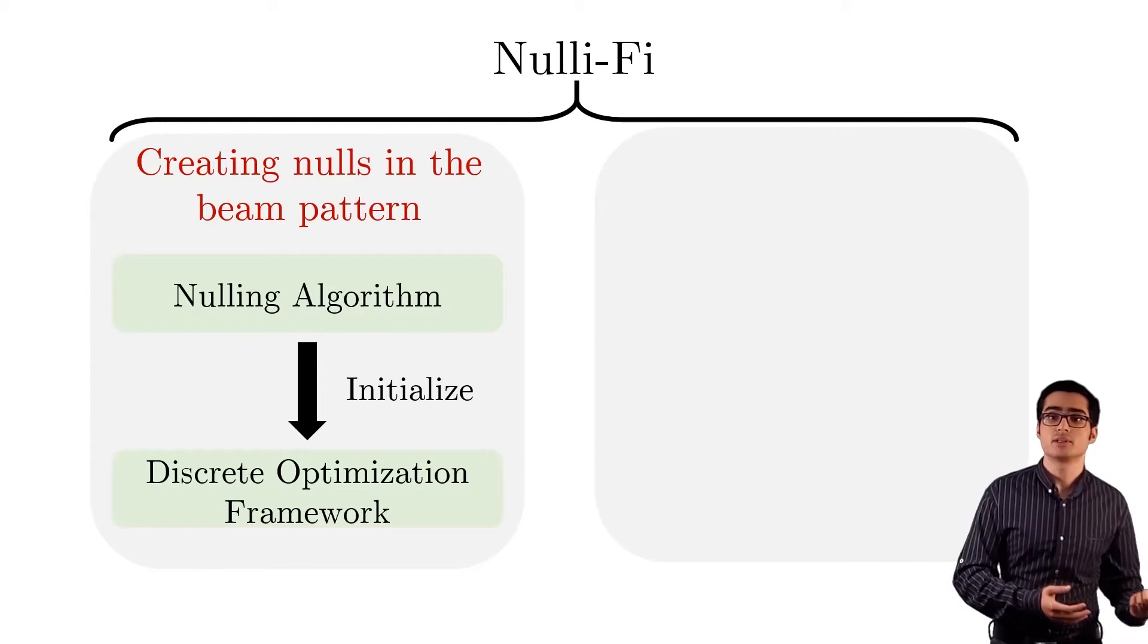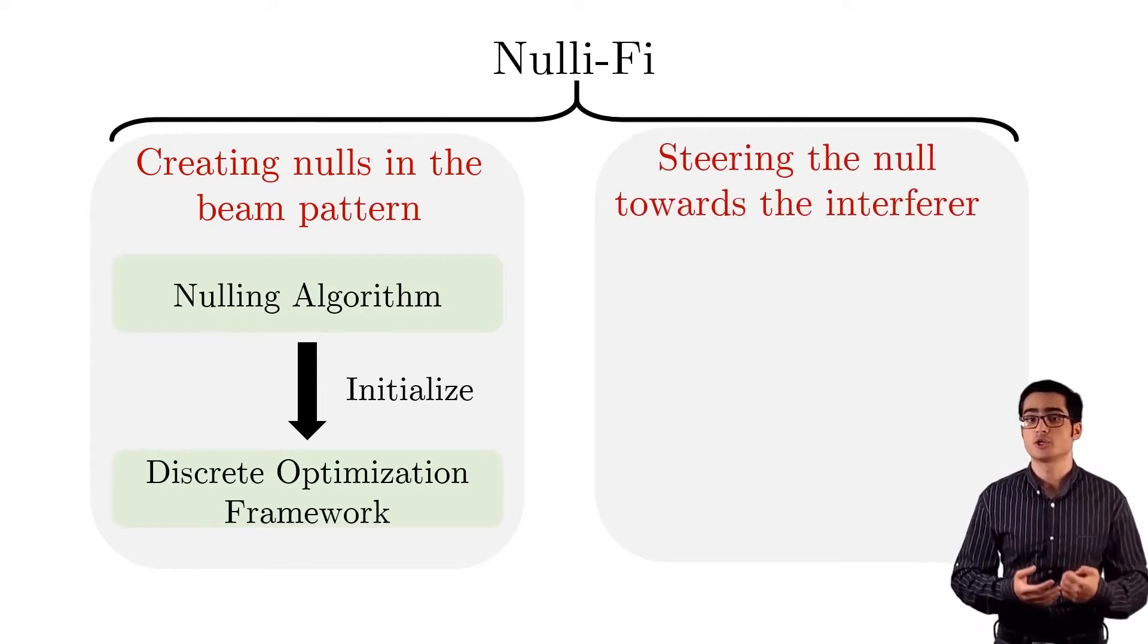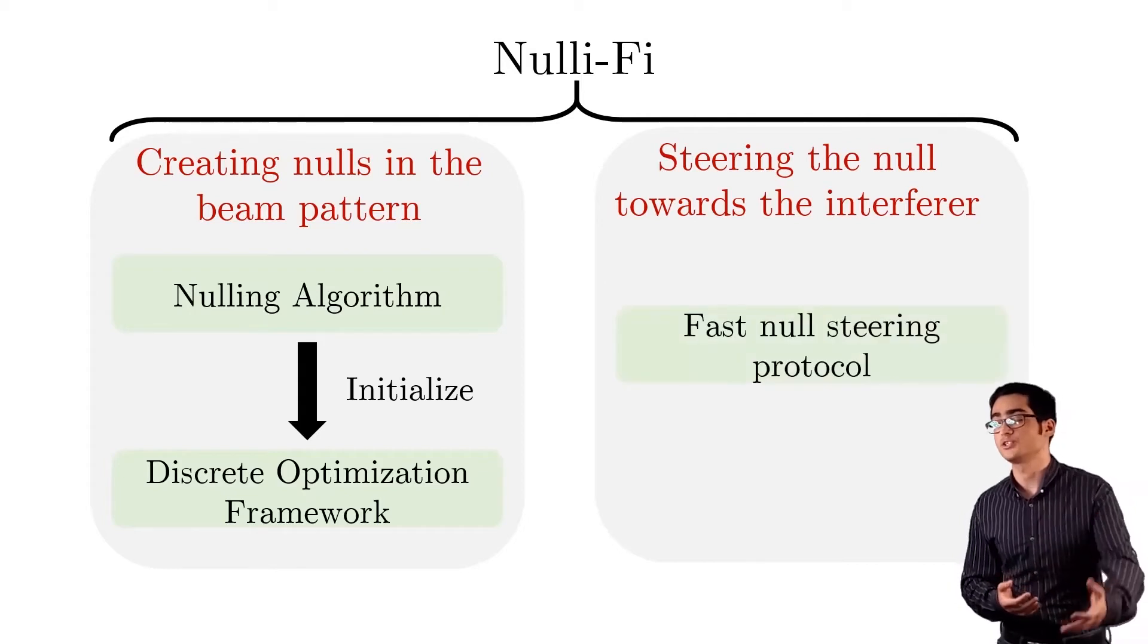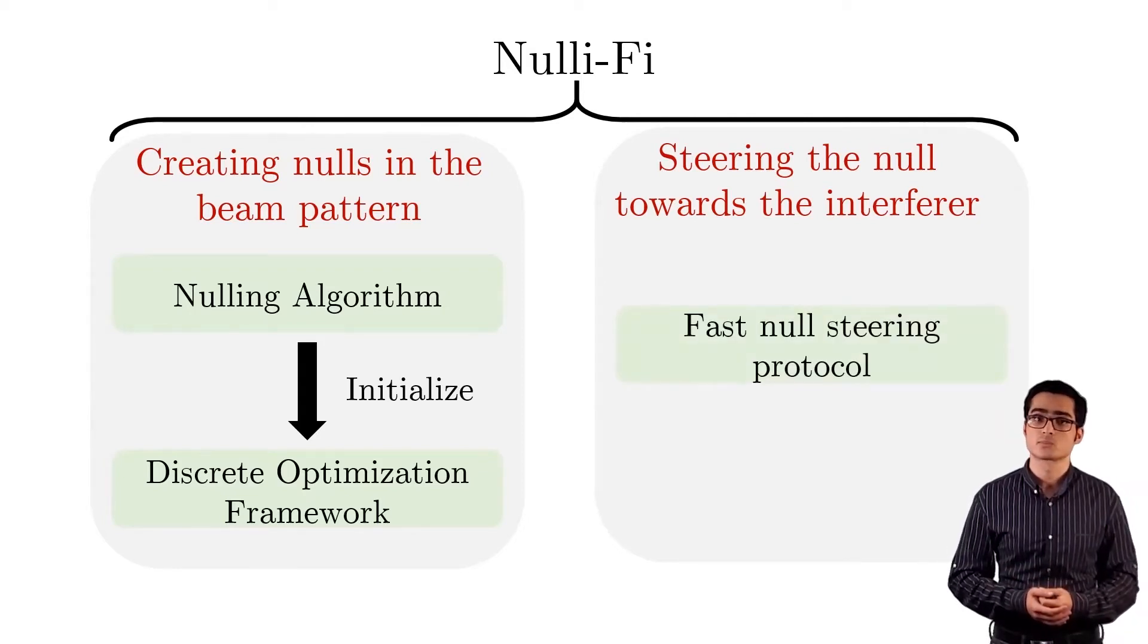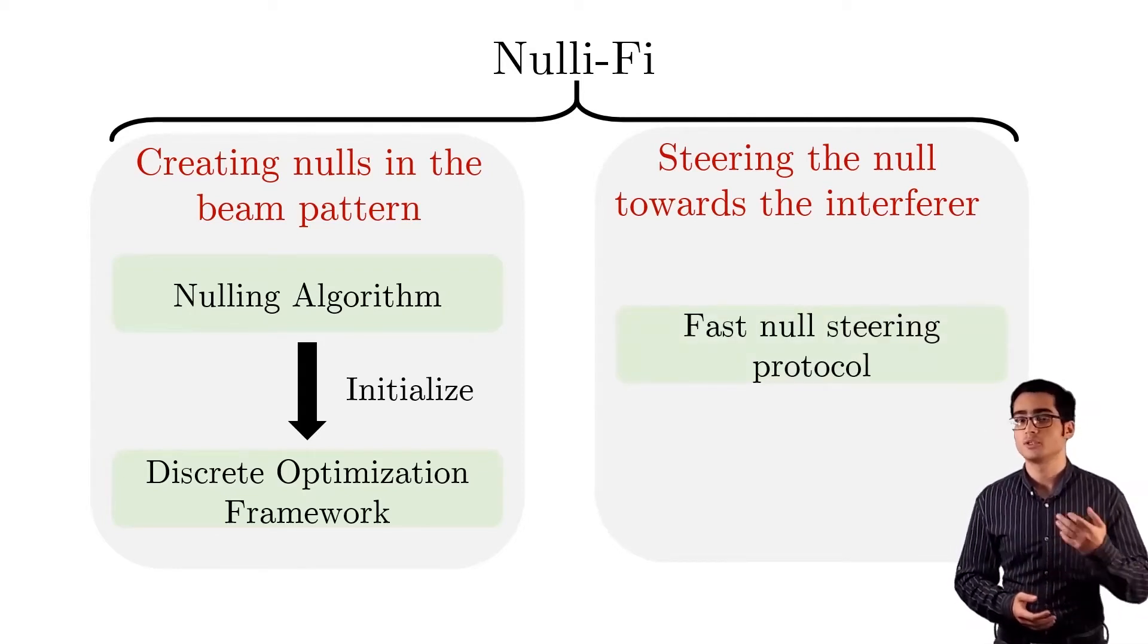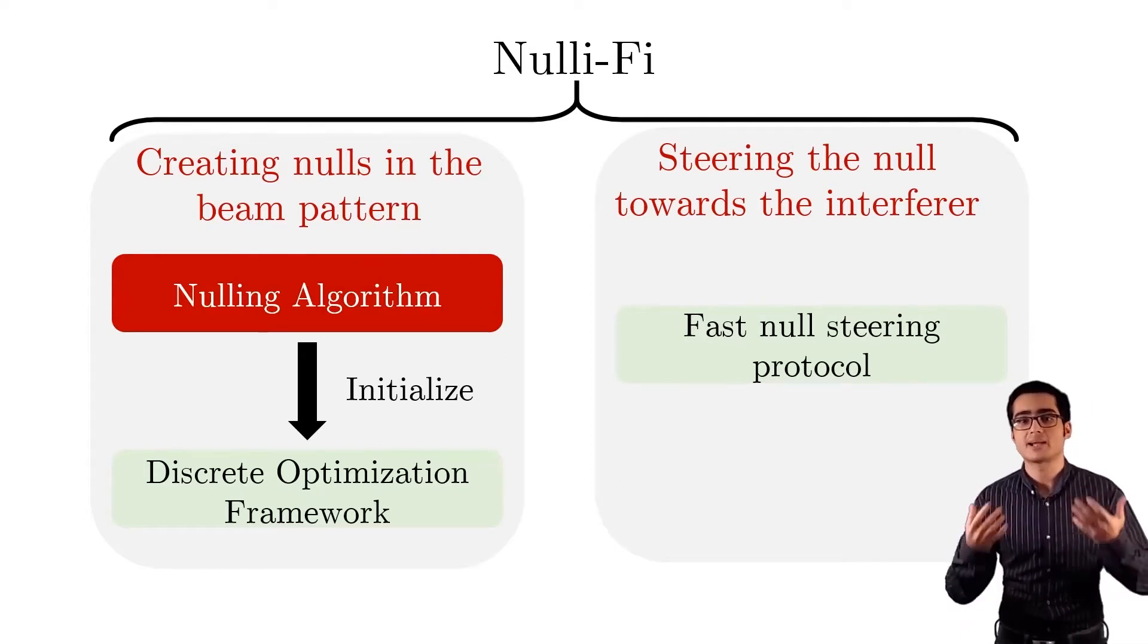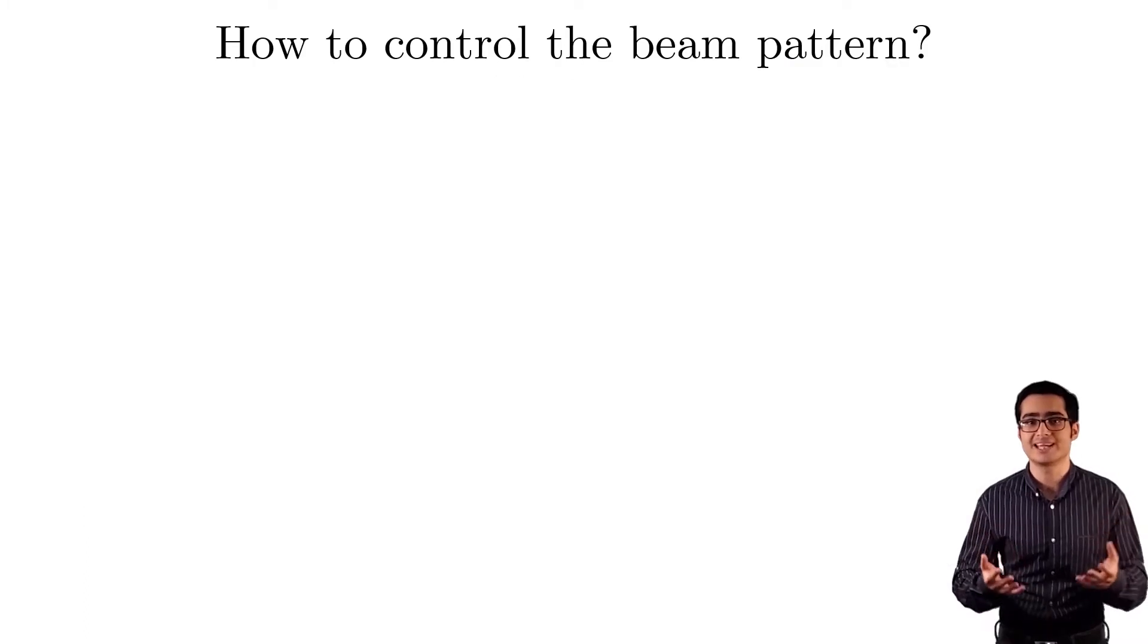The other component uses a fast null steering protocol to find the interference direction and steer the null towards it. I will first tell you about the nulling algorithm. But before I do that, let me give you some background on how beam patterns are created and controlled.